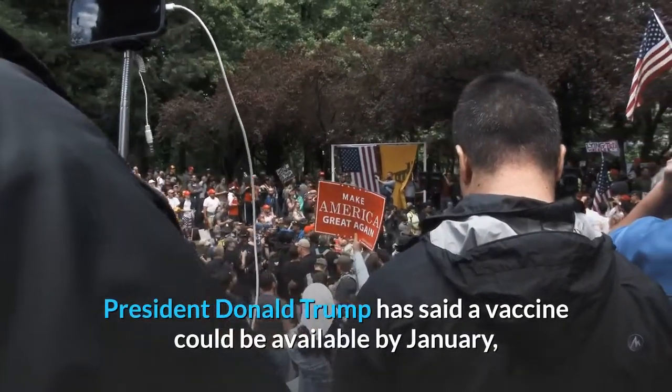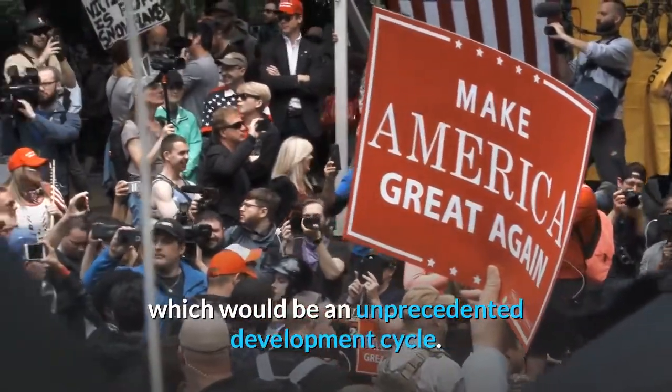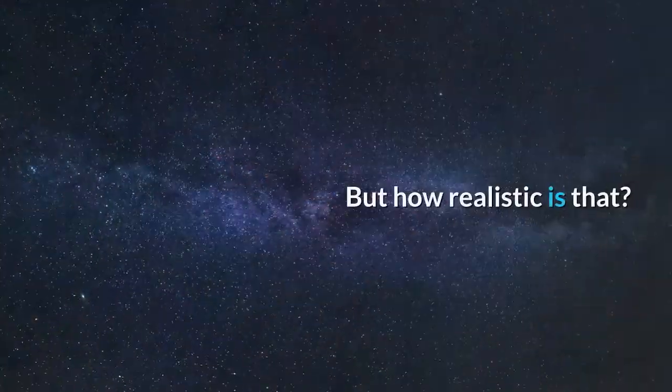President Donald Trump has said a vaccine could be available by January, which would be an unprecedented development cycle. But how realistic is that?